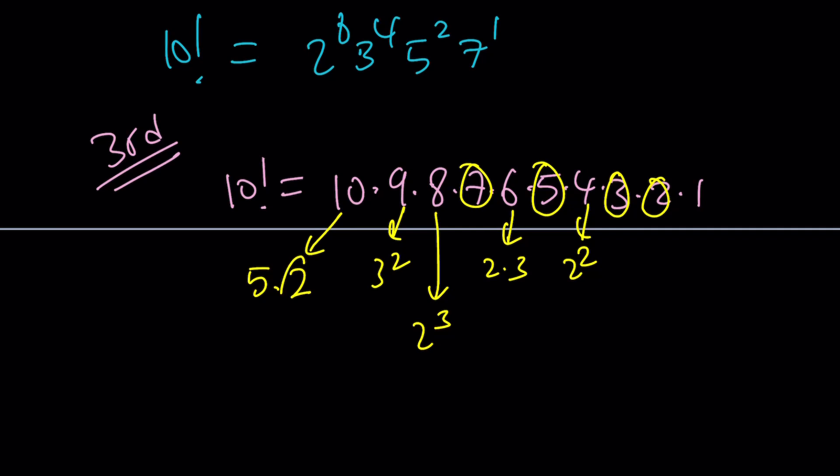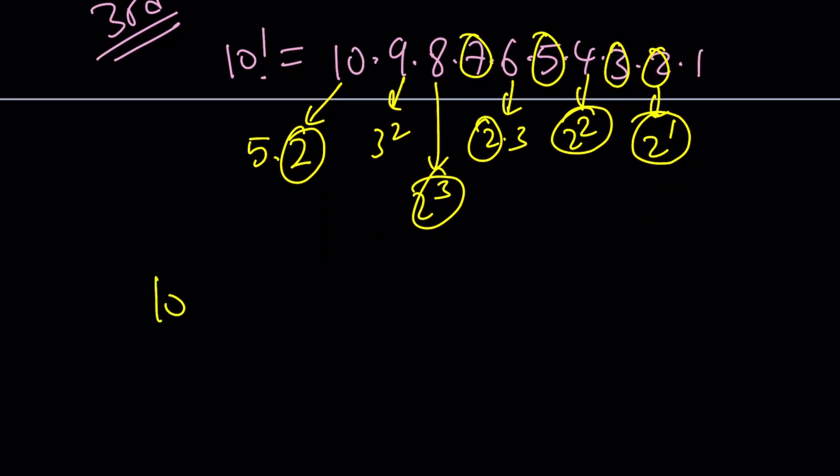For example, we have 2, 2 to the 3rd, and another 2, and 2 to the 2nd, and another 2, 2 to the 1st. Put it all together, you're going to get 2 to the 8th. It shouldn't be different, right? 3 to the 4th, and then 5 to the 2nd, and 7 to the 1st, because this is always, always, always unique. That's one of the coolest theorems in number theory.